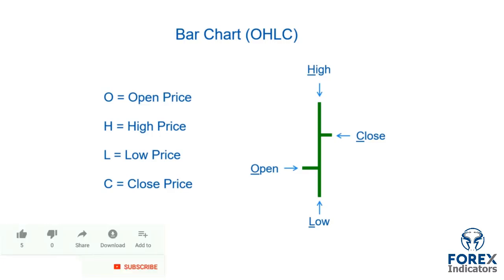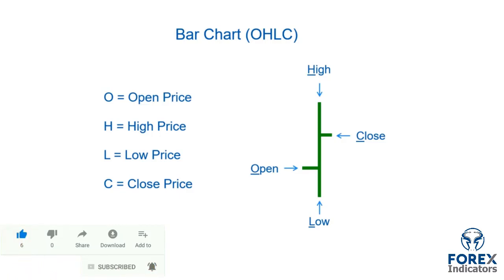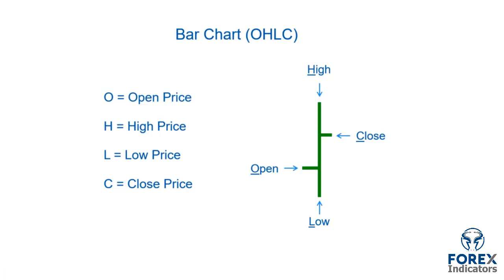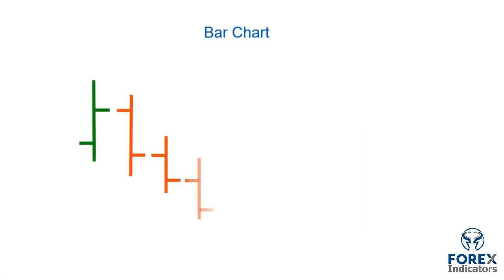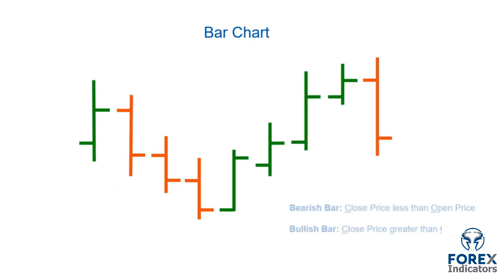One of the great things about bar charts is that you can identify a bullish or bearish bar very quickly, without relying on its colour. If the handle on the left is lower than the handle on the right, it is a bullish bar. And if the handle on the left-hand side is higher than the handle on the right, it is a bearish bar. I have simplified the example on the screen so the bullish bars are represented in green, and the bearish bars are represented in red, to make it a little clearer.